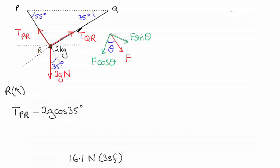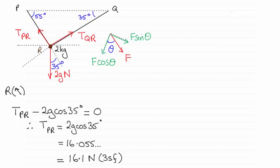The tension TQR is perpendicular to the direction we're resolving in, so it has no effect. This gives us the resultant force in this direction, and because the particle is in equilibrium that resultant force equals zero. Rearranging and solving — adding 2g cos 35 degrees to both sides and working in degrees mode on the calculator — gives 16.055..., which rounds to 16.1 newtons to three significant figures.